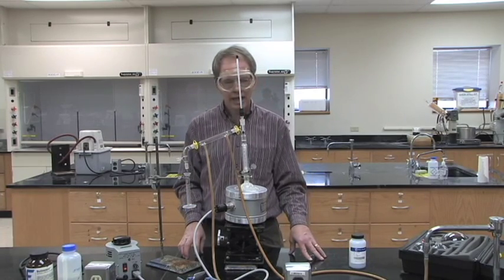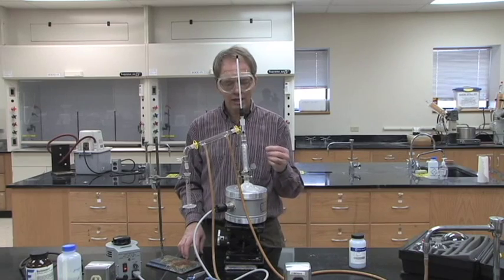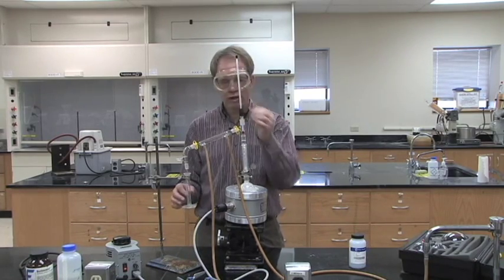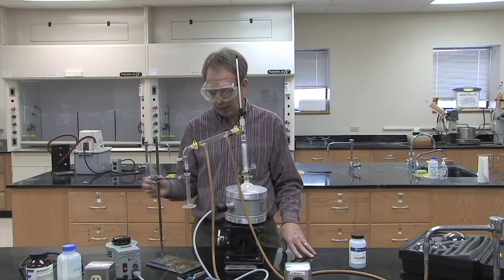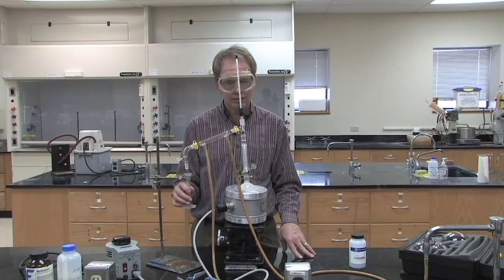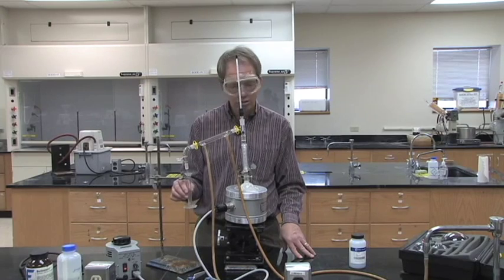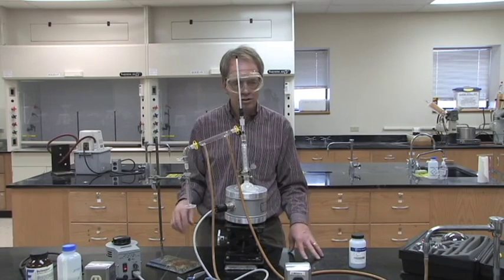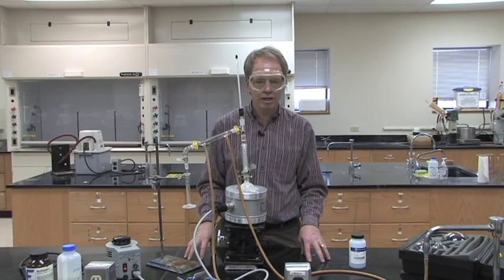When it starts to rise rapidly, what you'll do is switch from the first fraction, dump that out, and collect the second fraction. That'll continue to rise rapidly and then start to level off, and then you switch to your third fraction.